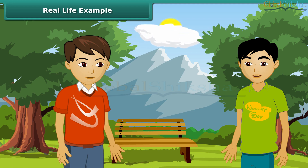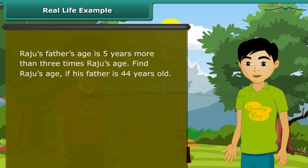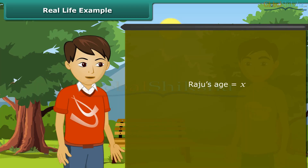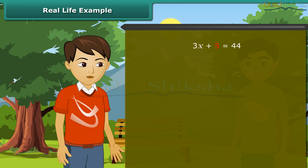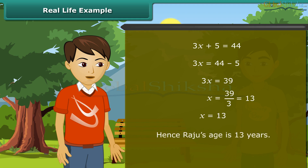Ajay, now you know how to solve equations. There is one problem for you. Ask. Raju's father's age is 5 years more than 3 times Raju's age. Find Raju's age if his father is 44 years old. Let Raju's age be X. So 3X + 5 = 44. Transposing 5 to the right hand side: 3X = 39. Transposing 3: X = 13. Hence Raju's age is 13 years.